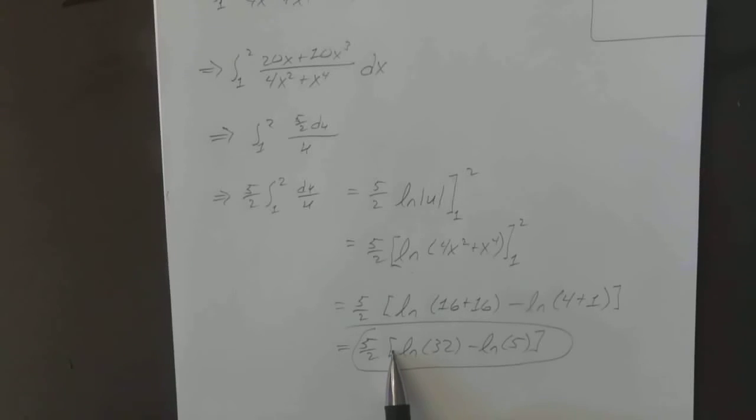And if you wanted, you can distribute the 5 over 2 and then have 32 to the power of 5 over 2, but you don't have to do all that. That's just going far and beyond what's necessary.